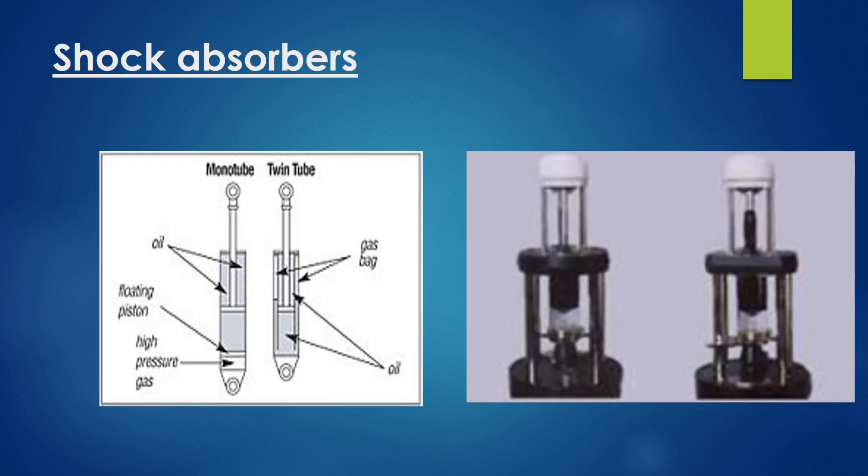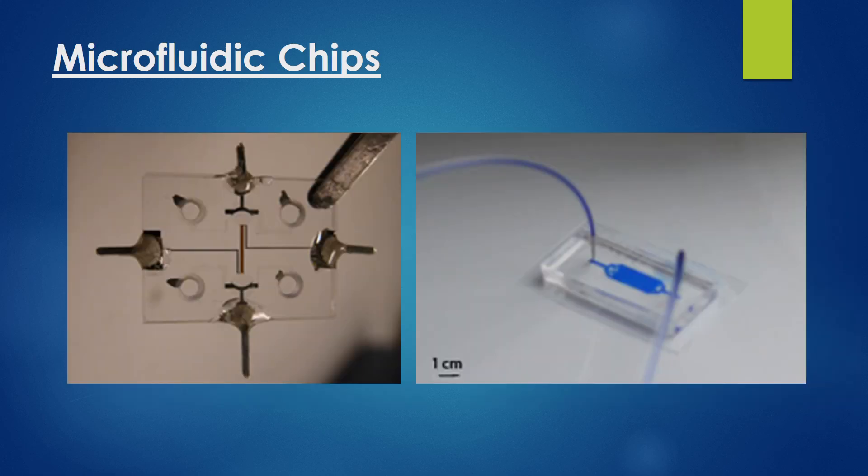On the left side of the screen, we have a diagram of a shock absorber and how it works. On the right side of the screen, there is a picture of an ER fluid shock absorber. Here we have two examples of microfluidic chips. On the left is an example made out of glass in the late 1990s, and on the right is an example made out of PDMS material.